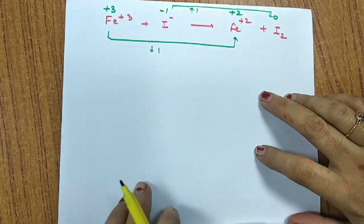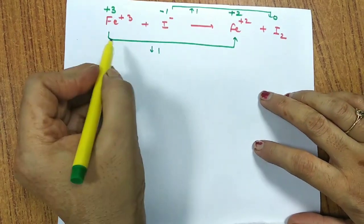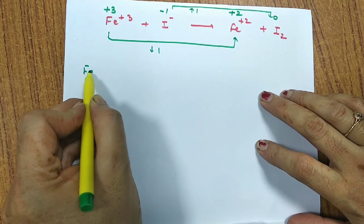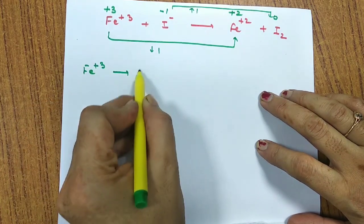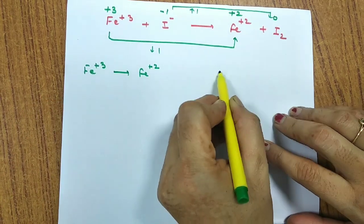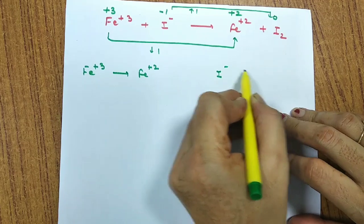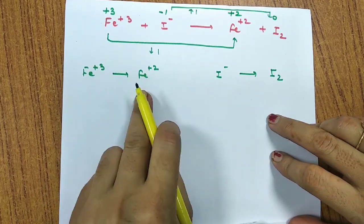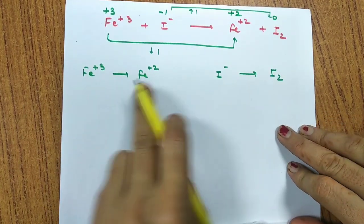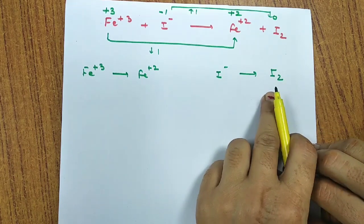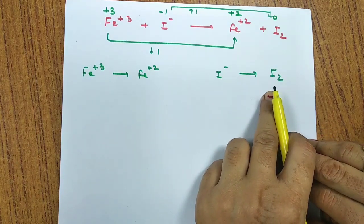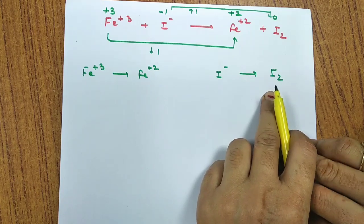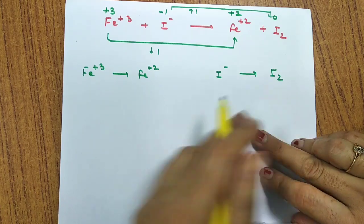Now we find the species getting oxidized and reduced. Iron changes from +3 to +2, so it is reduced by 1. Iodine changes from -1 to 0, so iodine is oxidized (by 1 per atom, ×2 = 2 total). We then split the equation into two half reactions: Fe³⁺ → Fe²⁺ (reduction) and 2I⁻ → I₂ (oxidation).